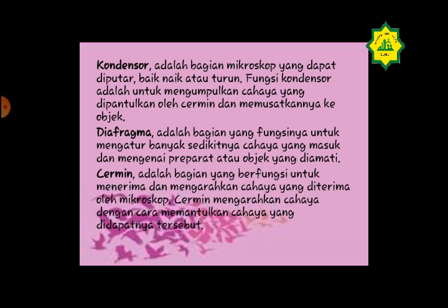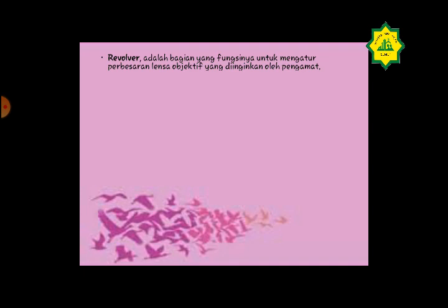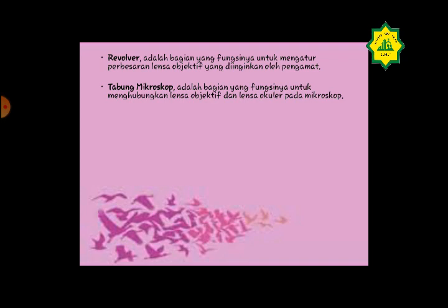Cermin adalah bagian yang berfungsi untuk menerima dan mengarahkan cahaya yang diterima oleh mikroskop, dengan cara memantulkan cahaya tersebut. Revolver adalah bagian yang fungsinya untuk mengatur perbesaran lensa objektif yang diinginkan oleh pengamat. Dan tabung mikroskop berfungsi untuk menghubungkan lensa objektif dan lensa okuler pada mikroskop.